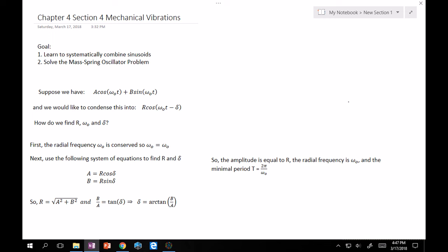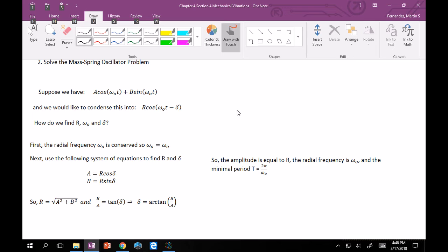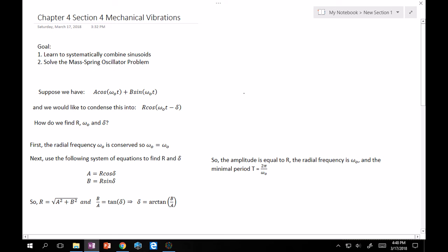So to start off, let's learn how to combine sinusoids. Let's say A cos(ωt) + B sin(ωt). And we want to write this into a form where it's R cos(ωt - δ). So how do we find R, ω₀, and δ? In order to find this, let's consider that first the radial frequency ω₀ is conserved. So if we're adding sinusoids of the same ω₀, we're going to get at the end of the day still the same ω₀.